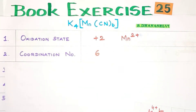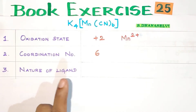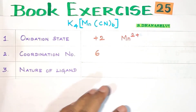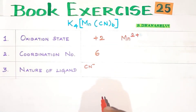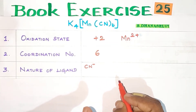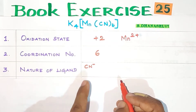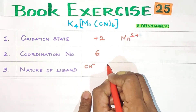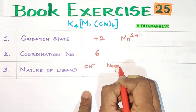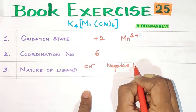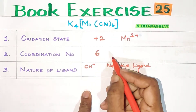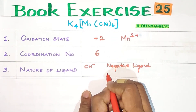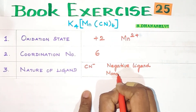Next is the nature of the ligand. The ligand here is CN-. By nature, we typically determine whether it is a strong field or weak field ligand. CN- carries a negative charge of 1 minus and is a monodentate ligand.